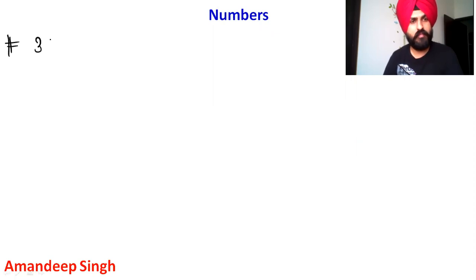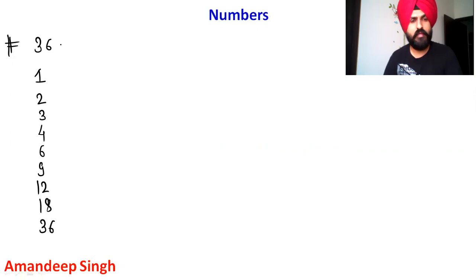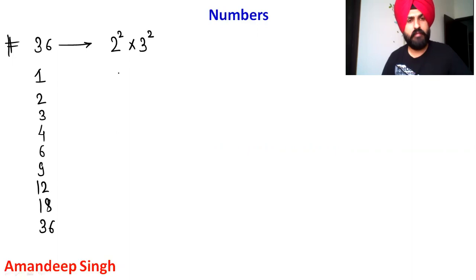Suppose we take the number 36. The factors of 36 are 1, 2, 3, 4, 6, 9, 12, 18, and 36 — these are 9 numbers which divide 36. In the first two videos we already talked about how to calculate the number of factors which are even, odd, and all. Now we are going to talk about the sum.